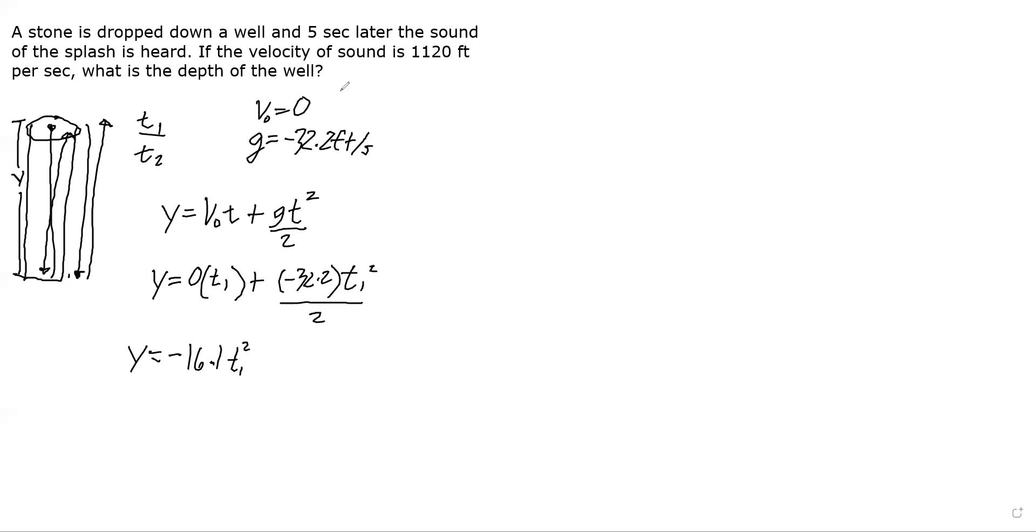There's also the return trip. The velocity of the sound is 1120 feet per second - this is constant with no acceleration. So the velocity of the sound is 1120, with time t₂ traveling distance y, the height of the well. We have the formula d equals vt, so y equals 1120 times t₂.